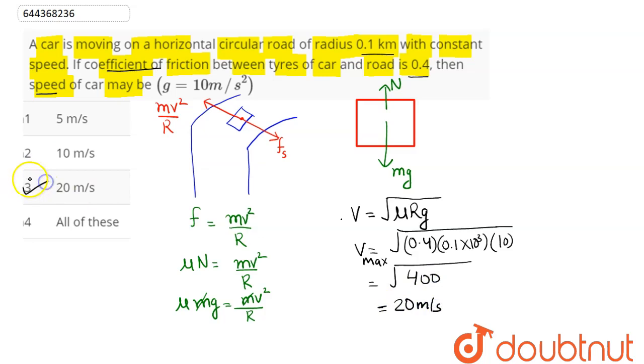maximum safe speed for turning on a level road is 20 meter per second, which is option number 3. Hence 3 is the correct answer, so we can say 3 is our answer.